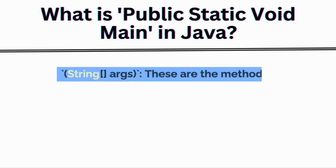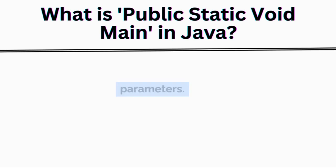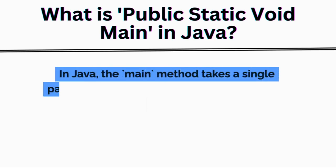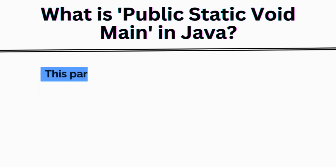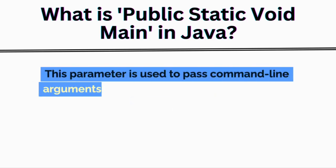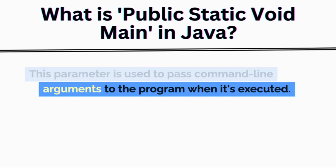String args are the method parameters. In Java, the main method takes a single parameter, which is an array of strings called args. This parameter is used to pass command line arguments to the program when it's executed.